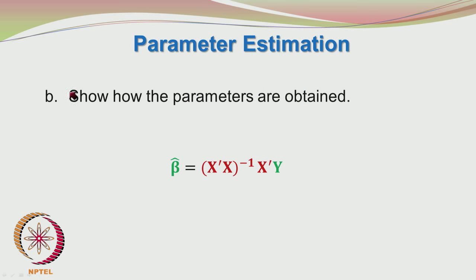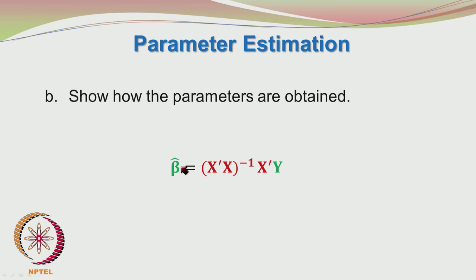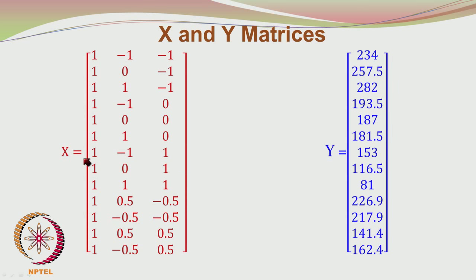The next part of the question is to show how the parameters are obtained. We first express the data in the matrix form, and once the X-prime-X matrix is set up, we take the inverse of the X-prime-X matrix and also take the X-prime-Y matrix. We pre-multiply the X-prime-Y matrix with the X-prime-X inverse and we get the vector of estimated parameters. So we have the X matrix.